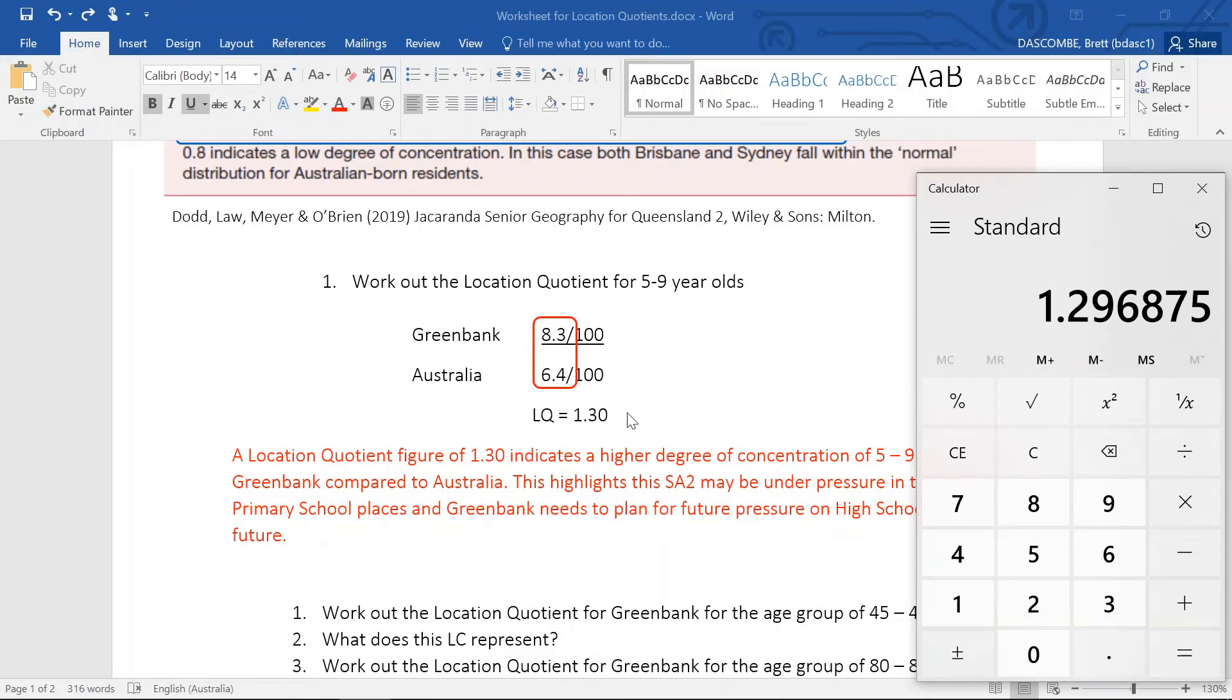We might want to round that up, but 1.296, 1.30 would be the location quotient.